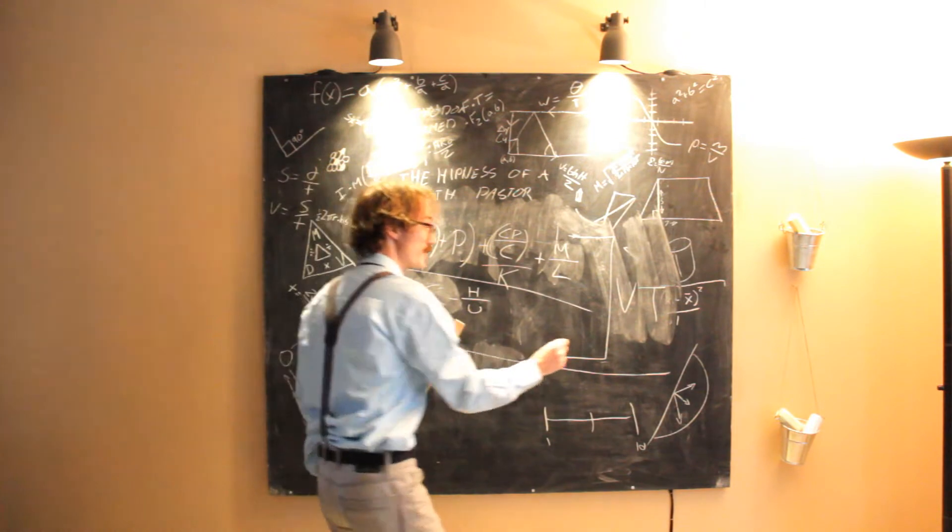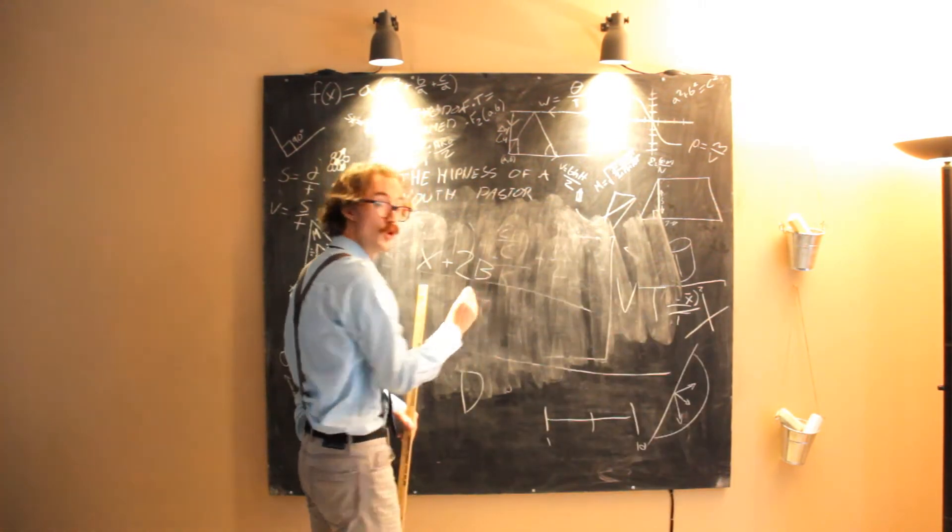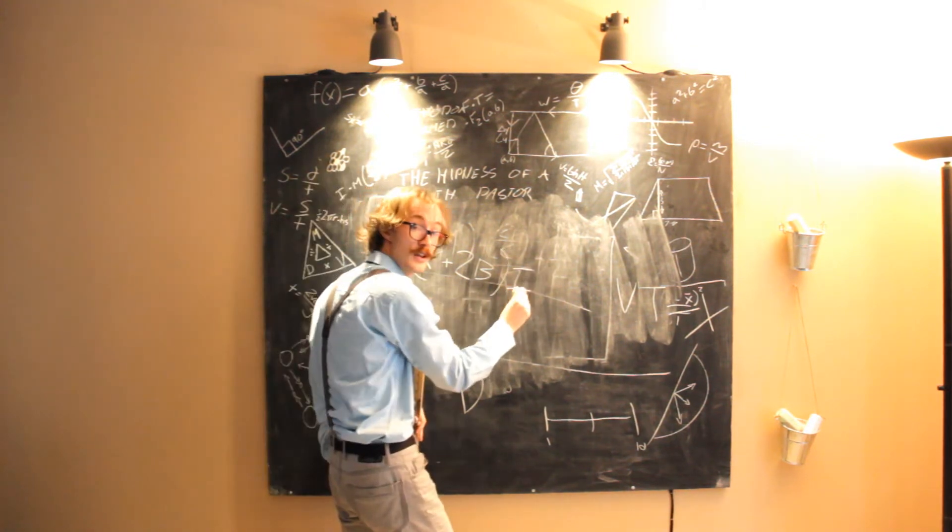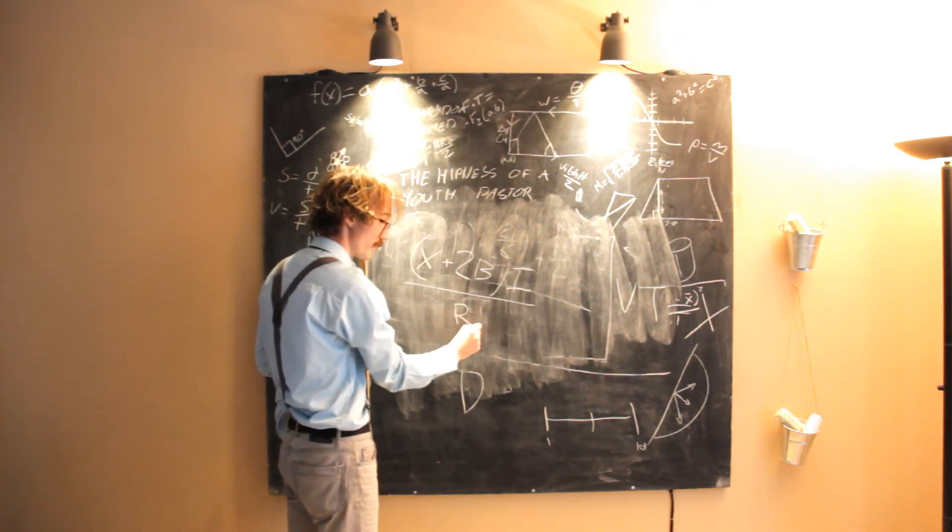This formula gives us x, x plus 2b. B is the height of your man bun in inches. The number of exotic instruments played divided by how much you look like Ryan Gosling on a scale of one to ten.